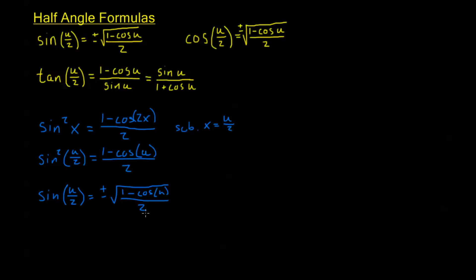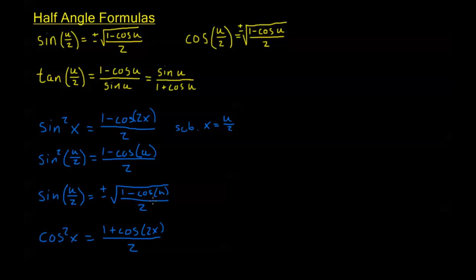We can do this exact same process for cosine of u over 2. We take our lowering power formula: cosine squared of x is equal to 1 plus cosine of 2x over 2. Making the same substitution x equals u over 2, we get cosine squared of u over 2 is 1 plus cosine of u over 2. Taking the square root of both sides, we get our half angle formula for cosine.